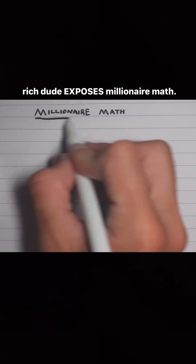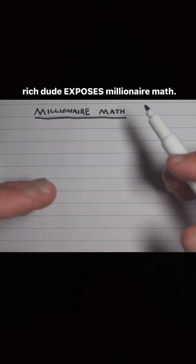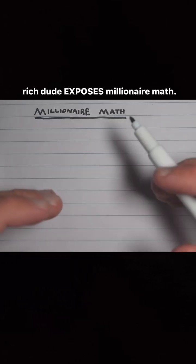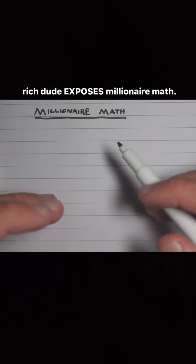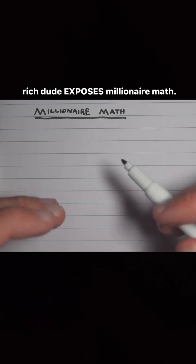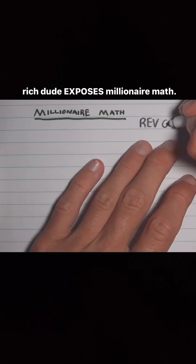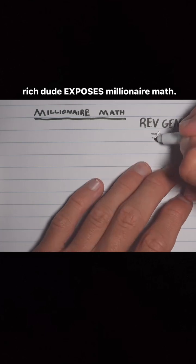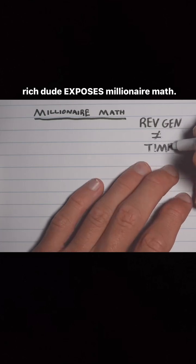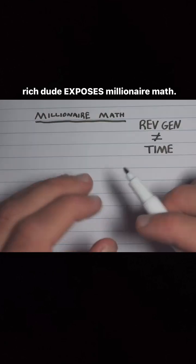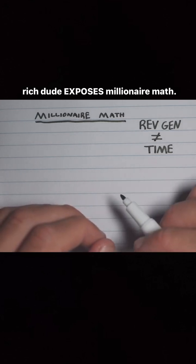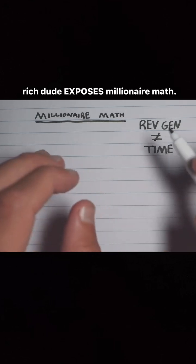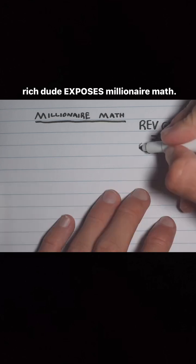You need to understand millionaire math. I promise you if somebody would have told me this while I was a senior in high school, I would have been a millionaire before my first year in college. Number one: you have to disconnect your revenue generation from time, because that is exactly how they get us. They try to anchor your revenue generation with time in the form of dollars per hour.